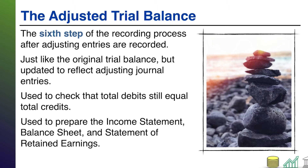So you take your original trial balance, you determine what adjustments are needed, you make adjusting journal entries, and then you reproduce the trial balance including the effects of those adjusting entries, and that gives you the adjusted trial balance. The main purpose of this is to ensure that our debits and credits still equal each other by the time we're done with our adjusting entries.